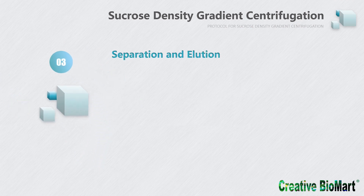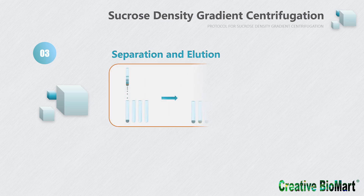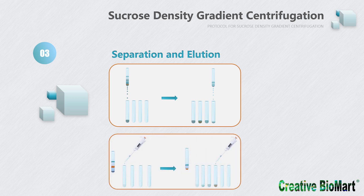After centrifugation, particles obtained from different bands need to be further separated and purified. Separation can be done in two ways: different components can be separated and collected from the bottom up with the aid of an instrument like a gradient fractionator, or they can be separated and collected from the top down with a pipette. After separation, the fraction obtained is a mixture of sucrose solution and the particles of interest, so elution is required to further purify the fraction. Elution should be performed according to the characteristics of the particles needed, such as proteins.